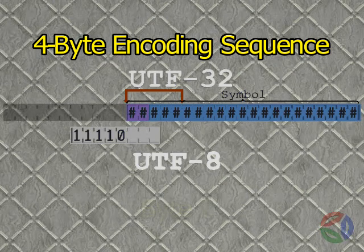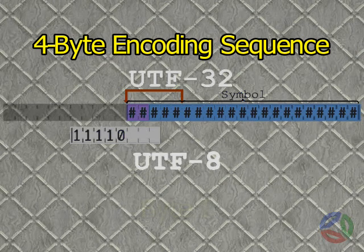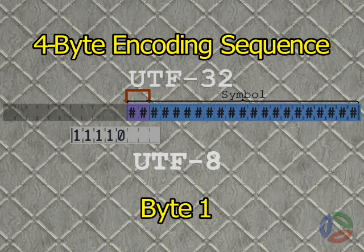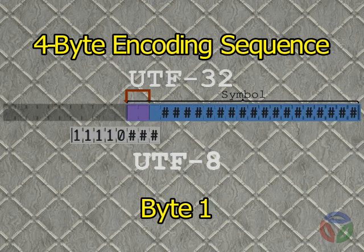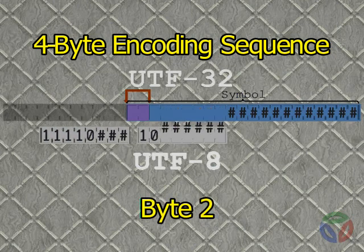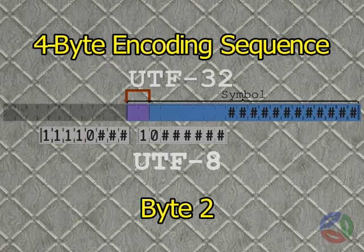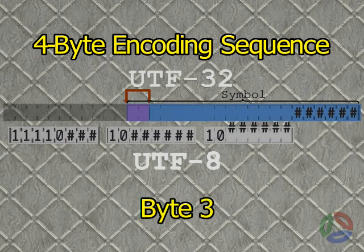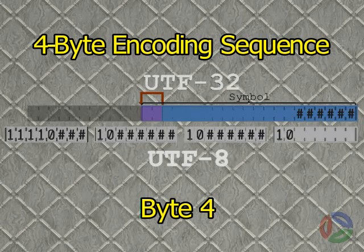4-byte sequence: If any of bits 16 through 20 are 1s, then the code point occupies 21 bits and requires 4 bytes for encoding. Because only 24 planes are supported, bits 19 and 20 must not both be set. In this last case, the start byte begins with 11110, leaving room for the first 3 bits of the code point. Encoded byte 2 begins with 10, leaving room for the next 6 bits. Encoded byte 3 also begins with 10, leaving room for the next 6 bits. Encoded byte 4 also begins with 10, leaving room for the last 6 bits of the code point.